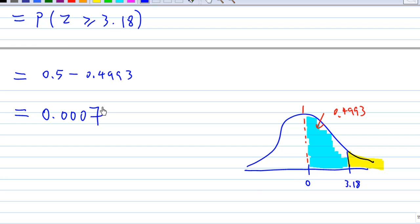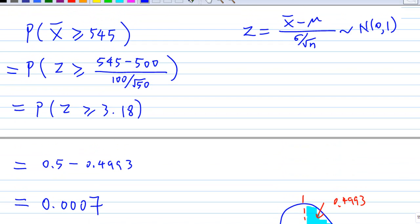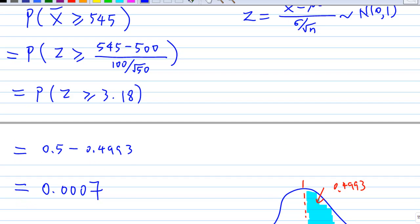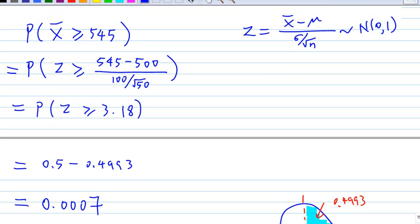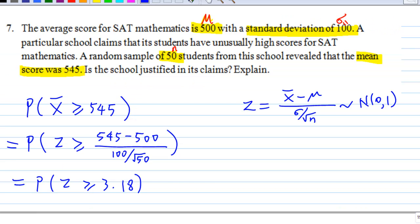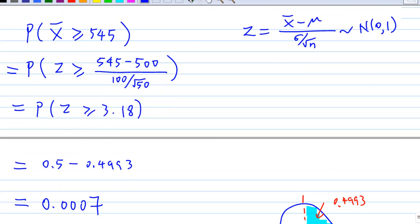The probability that x bar is greater than or equal to 545 is very, very rare. If the school has a sample of 50 and finds that the mean is 545, that means that this school has an unusually high score.